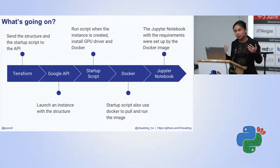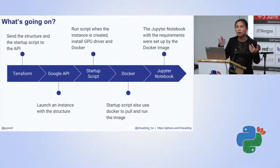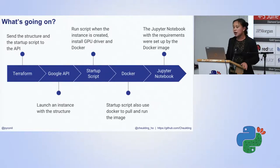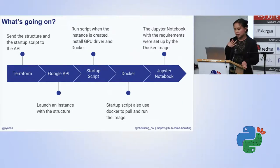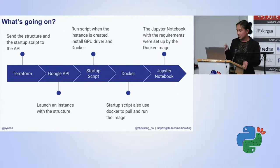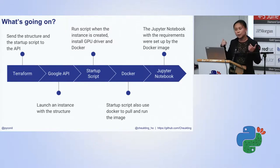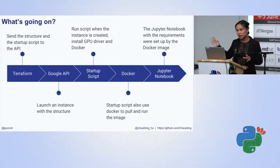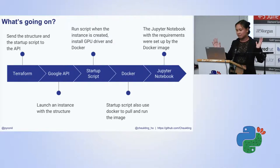Here's the overall flow when I launch an instance: Terraform communicates with Google Cloud Platform by calling the Google API to create the instance according to the script. The API tells the platform to launch the instance, which then runs the startup script — installing the driver and Docker. Docker then pulls and runs my image. Because the Docker image contains the repo and the Jupyter notebook, I can just use the IP address to access my environment and have everything I need for the assignment.